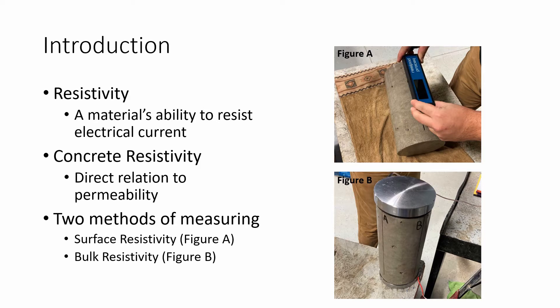There are two means of measuring concrete resistivity. The method this module will be covering in detail is surface resistivity. This method utilizes a probe to measure the surface resistivity of concrete, which then can be converted to resistivity.